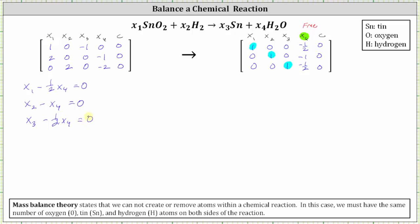Because x sub four is the free variable, we will now express x sub one, x sub two, and x sub three in terms of x sub four. In the first equation, we add one half x sub four to both sides, which gives us x sub one equals one half x sub four. In the second equation, we add x sub four to both sides, which gives us x sub two equals x sub four. In the third equation, we add one half x sub four to both sides, which gives us x sub three equals one half x sub four. x sub four is free and therefore x sub four can be any value.